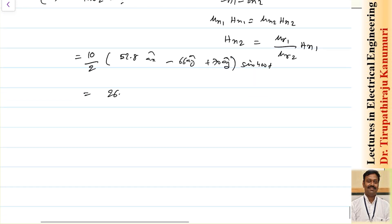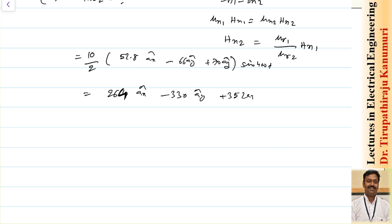Simplifying: Hn2 = (264 ax - 330 ay + 352 az) sin(400t).